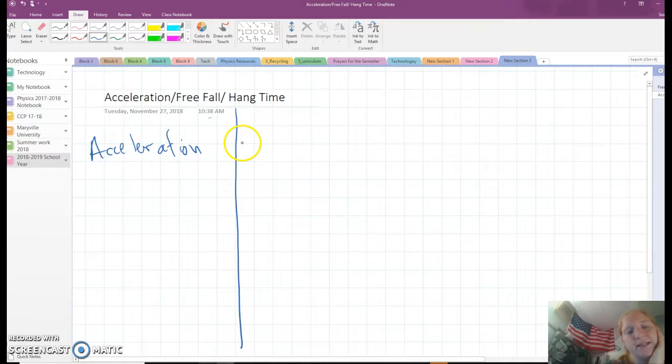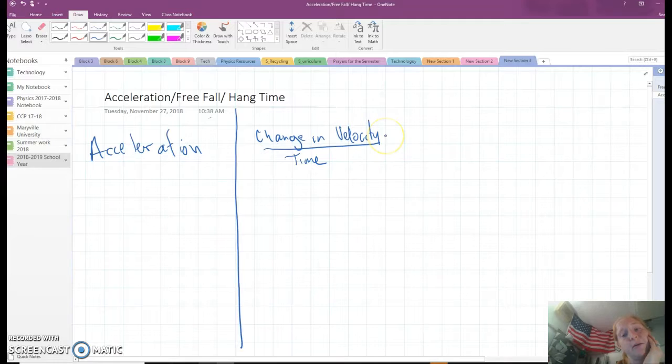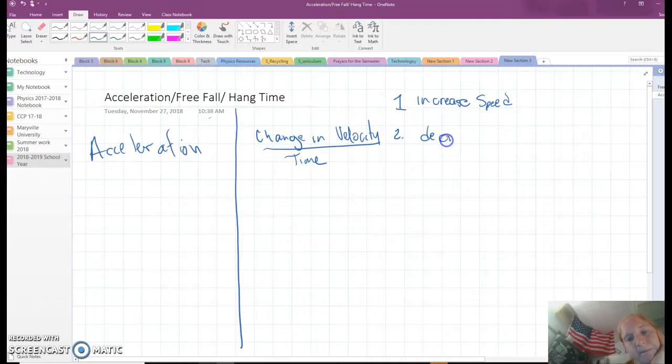The formalized definition is the change in velocity over time, and the three ways you can change it is one, increase speed, two, decrease speed, or three, change directions.